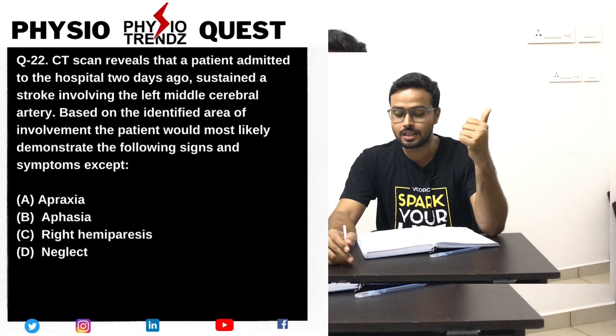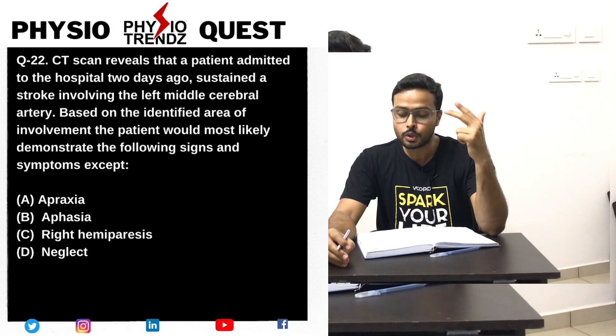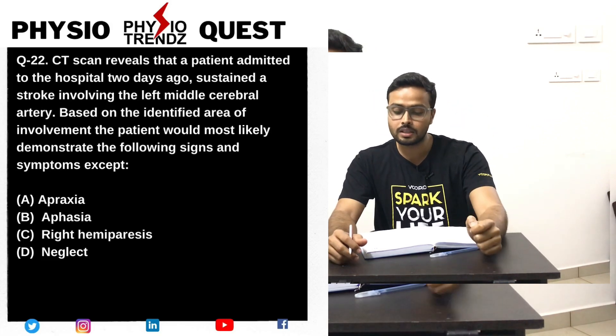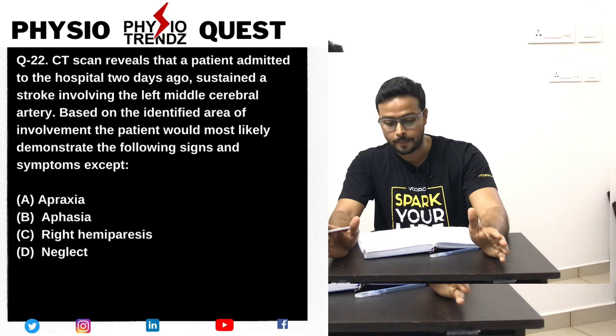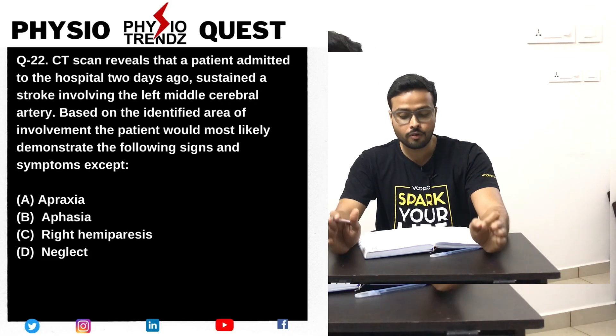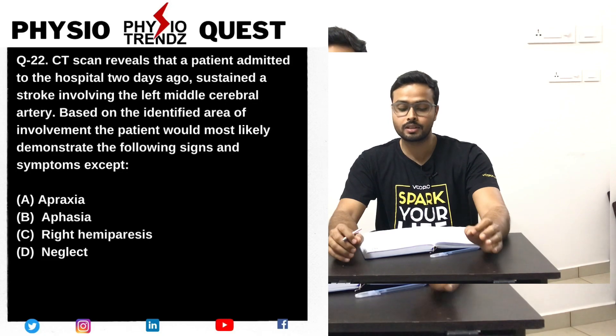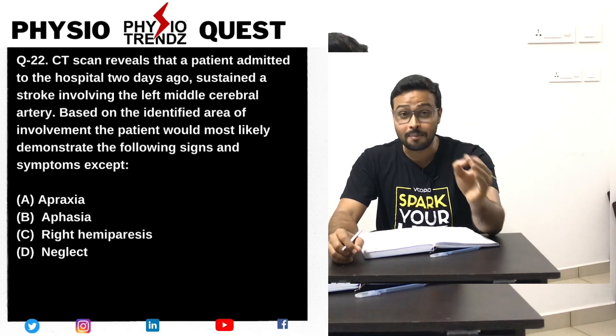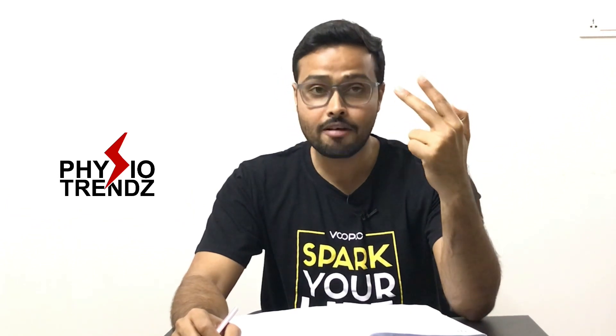The first question was number 22. The information given is that computer tomography reveals a patient admitted to the hospital two days ago sustained a stroke involving the left middle cerebral artery. Based on the identified area of involvement, the patient would most likely demonstrate the following signs and symptoms — except: option A apraxia, option B aphasia, option C right hemiparesis, and option D neglect. All these options can be present in stroke patients, which is why this question is quite confusing.